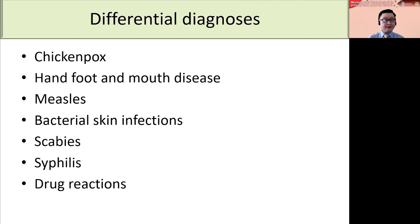There is a list of differential diagnoses that can mimic monkeypox, including chickenpox, hand, foot, and mouth disease, measles, bacterial skin infections, scabies, syphilis, and drug reactions. I'm going to share the important differential diagnoses — especially chickenpox, hand, foot, and mouth disease, and measles — and how we differentiate these conditions from monkeypox.